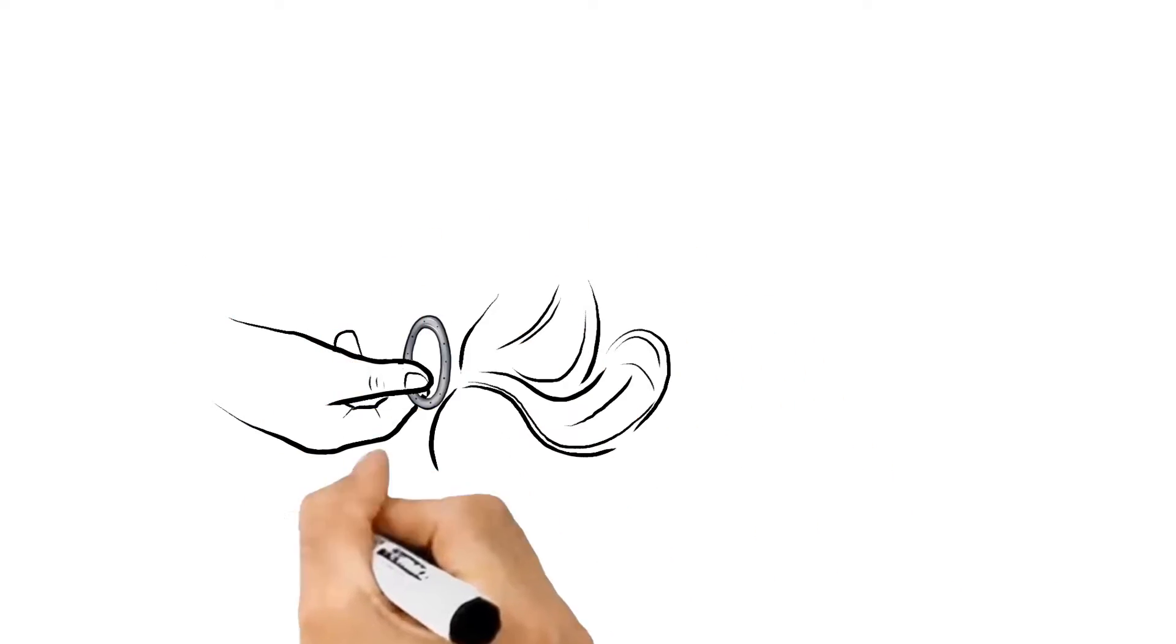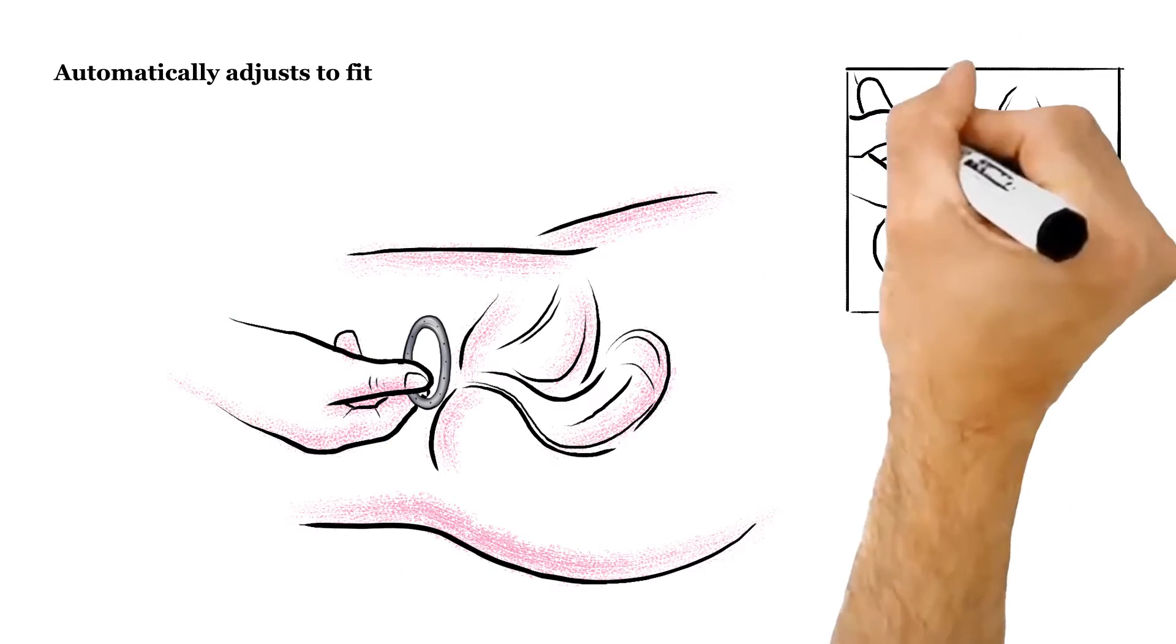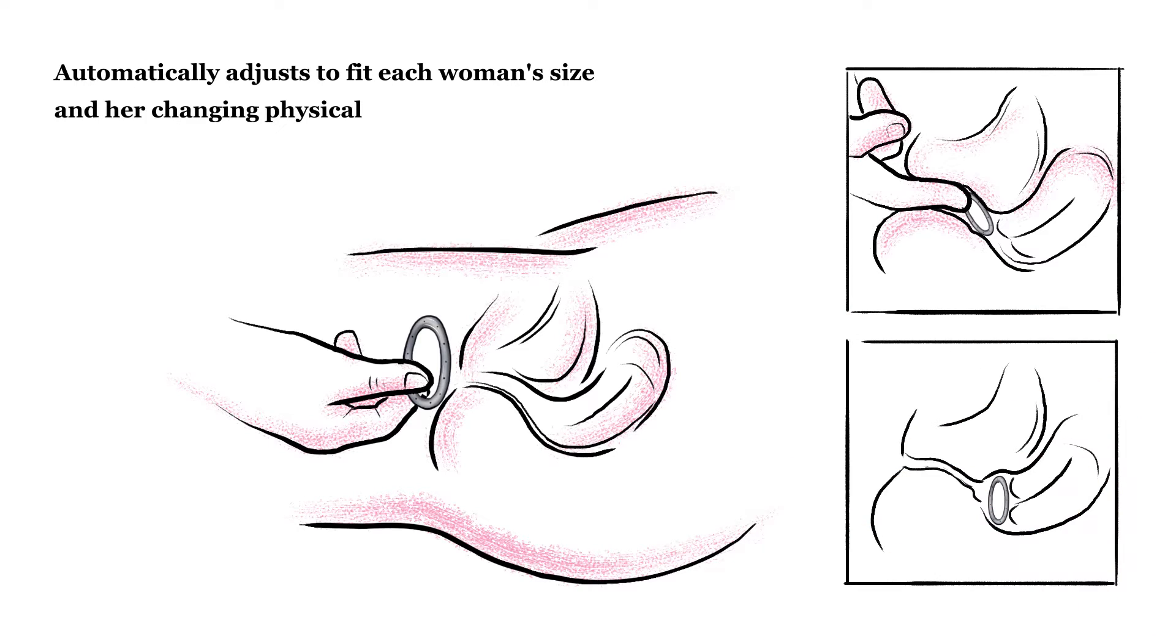Gynopess is a patented, self-inserted pessary that automatically adjusts to fit each woman's size and physical activities, thereby preventing incontinence and prolapse.